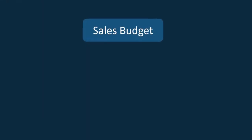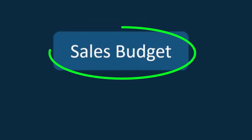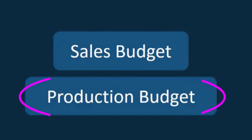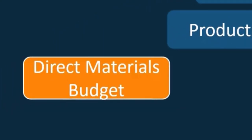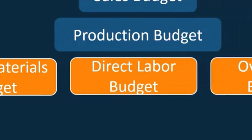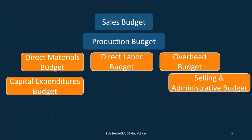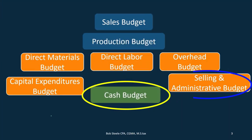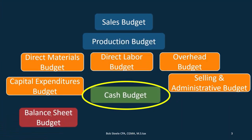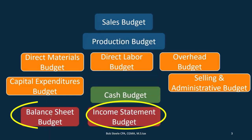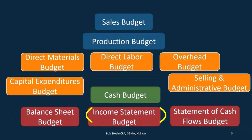These are the components. We started with the sales budget — we need to do it in this order. Then we have the production budget, which will be used to make the direct materials budget, the direct labor budget, the overhead budget, as well as the capital expenditures budget, and the selling and administrative budget. Then we're going to have the cash budget, and then we can put together the statements: the balance sheet budget, the budgeted income statement, as well as the cash flow.